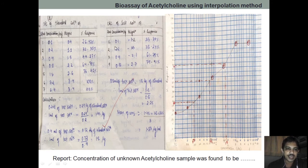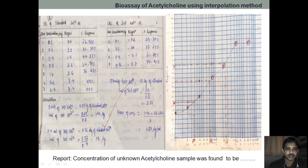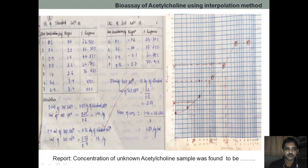From that, we have taken three concentrations. For 0.2 ml of test solution, which gives 38.24%, we are extrapolating and we find 0.29. That is why we have written: 0.2 ml of test solution contains 0.29 microgram of the standard acetylcholine. So 1 ml contains that concentration, corresponding to 0.1.